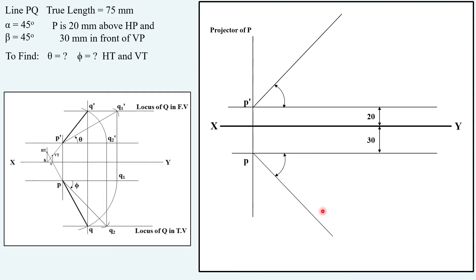So how to proceed further? The trick is: draw a vertical projector, assuming this as your front view length and this as your top view length. You can randomly draw a vertical projector at a particular distance from the projector of P. Once you do this, you'll find two assumed loci, one in front view, one in top view. Let us name this assumed point as A. A' is the assumed front view, A is the assumed top view.